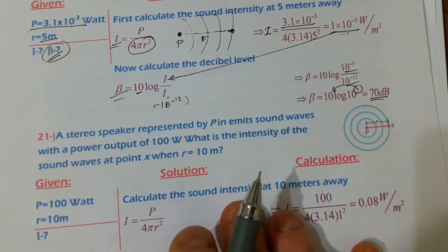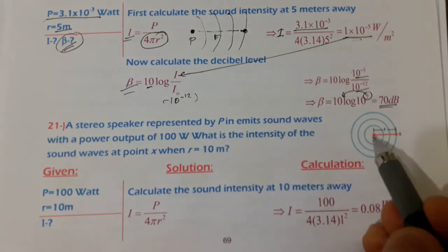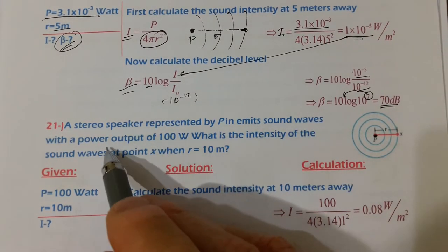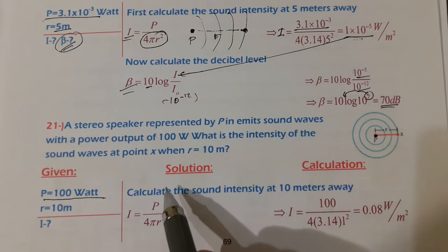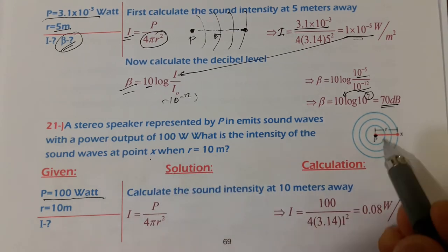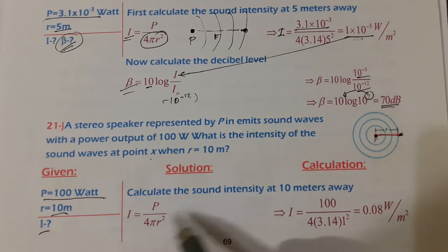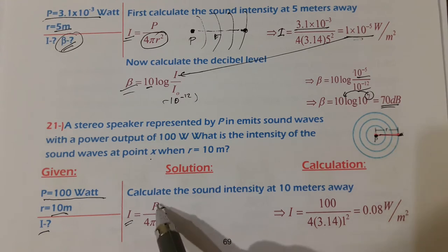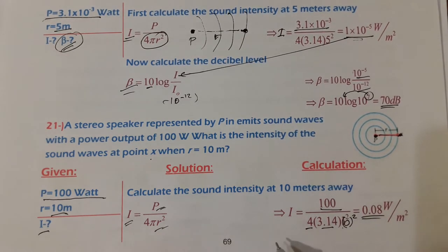Question number twenty-one: a stereo speaker emits sound waves with a power of 100 watts. What is the intensity at a point X where r = 10 meters? Sound intensity equals power divided by 4πr². Power is 100 W and r is 10 m. The answer is 0.08 W/m².